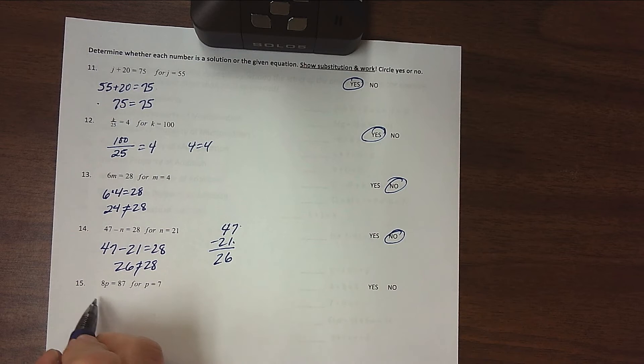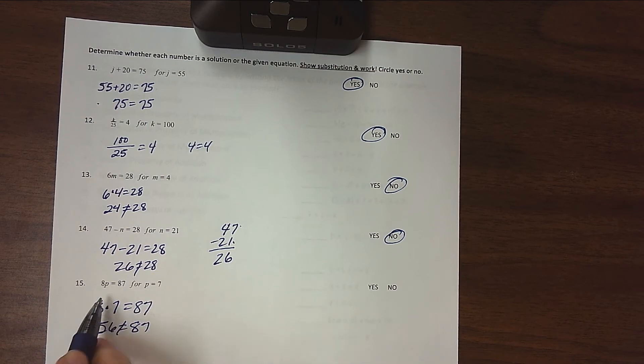So that's a no. 8 times p equals 87. If p is 7, is 8 times 7 equal to 87? No, 8 times 7 is 56, not 87. Remember, this means times here, so that's a no.